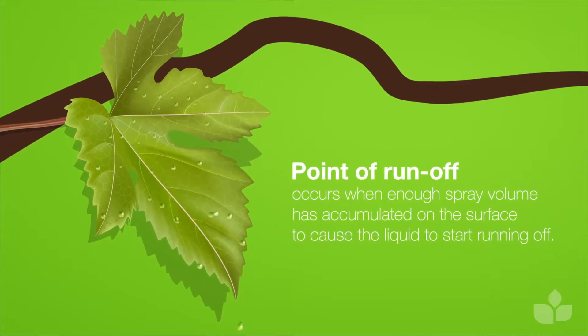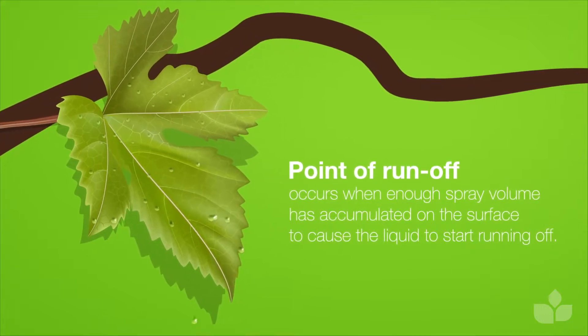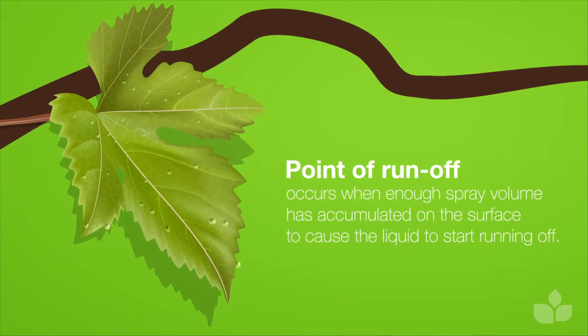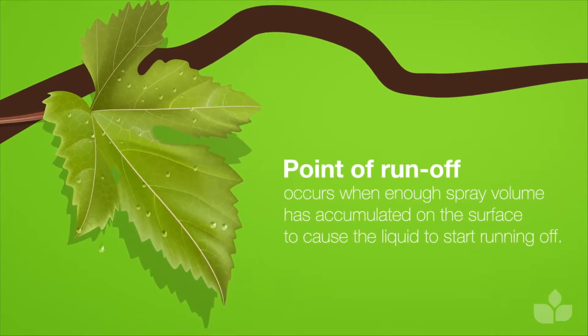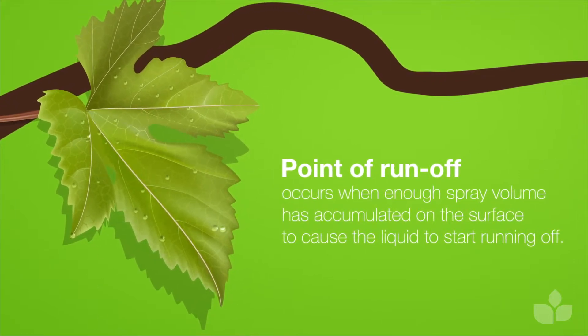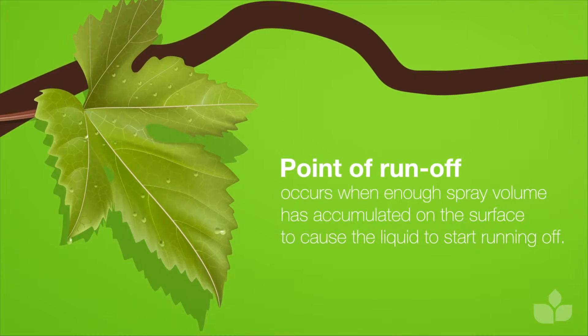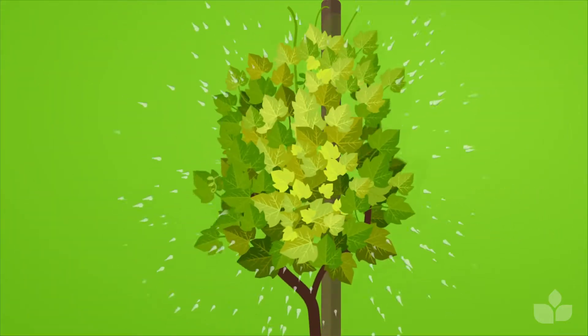Understanding this is important for effective and efficient spraying, as tree and vine crop chemical label rates are determined using the point of runoff volume for a canopy at each stage in a season, to calculate the mixing rate.